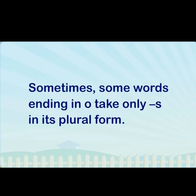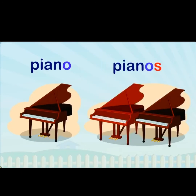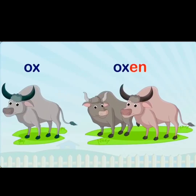Sometimes some words ending in -o take only -s in their plural form. For example: piano → pianos. Also note that the plural of ox is oxen, not oxes — remember that.